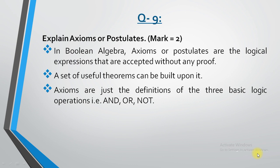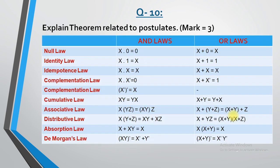In boolean algebra you have certain types of postulates or axioms which represent logical expressions. You just need to use them — they do not contain any proof. These postulates are made of 3 basic logic operations: AND, OR, and NOT. Using these postulates you can build different kinds of theorems. Next we look at the theorems related to postulates.